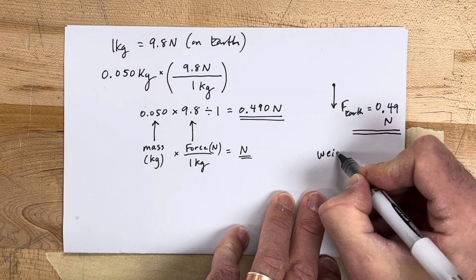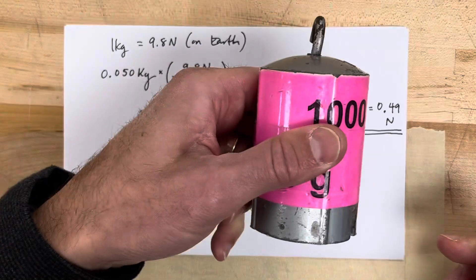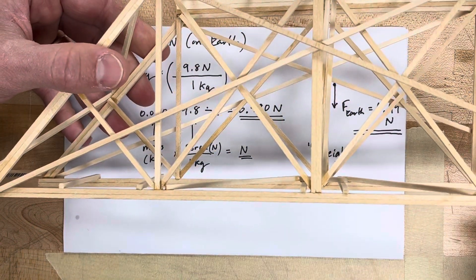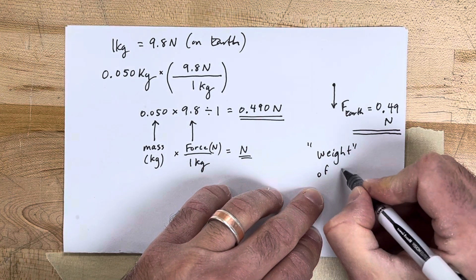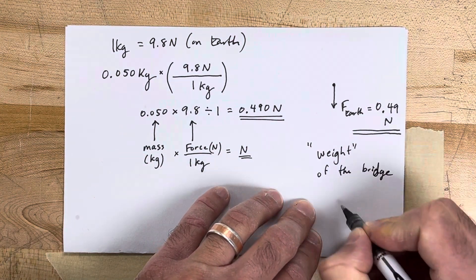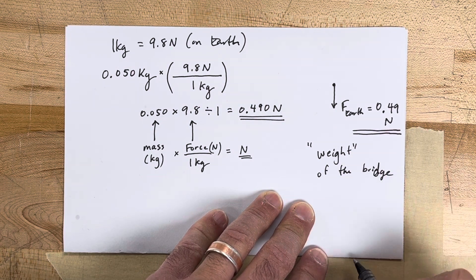Oh sorry, my calculation was not for this mass, my calculation was for this bridge. So that's how you would calculate the weight of the bridge, which would be 0.49 newtons acting downwards towards the Earth.